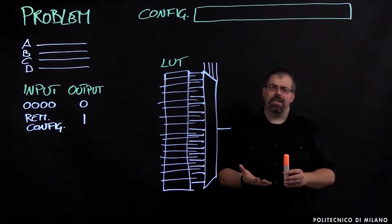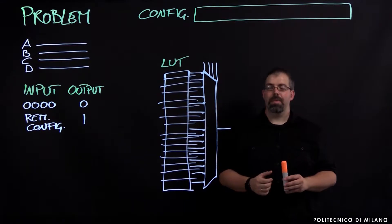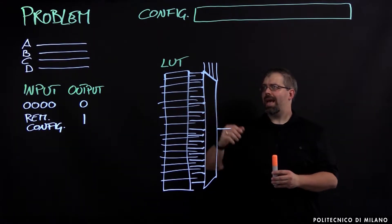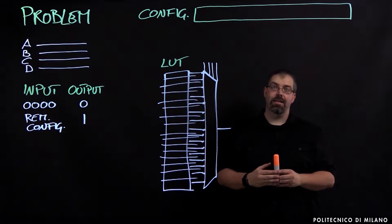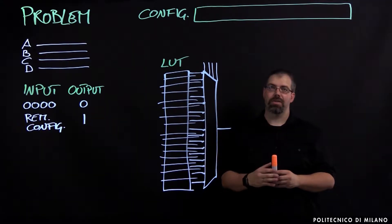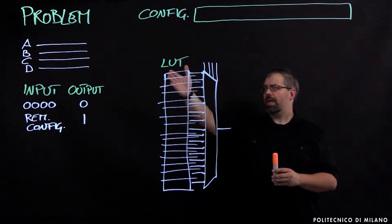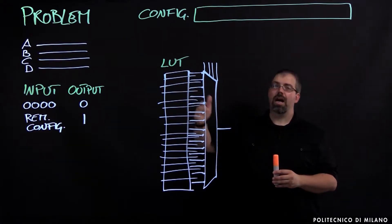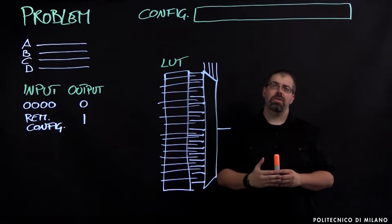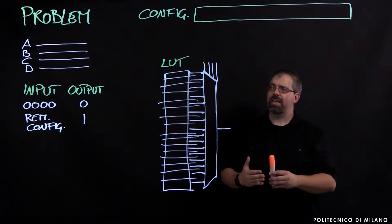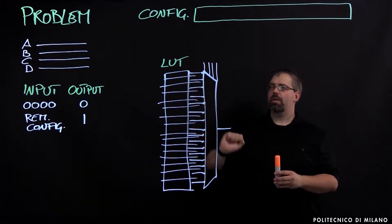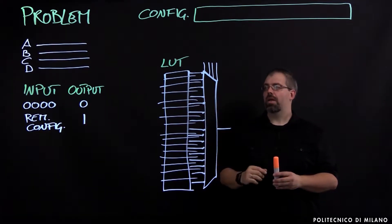In order to do this we need to start from a problem, and we already have one. We had the four-line channel and we were designing the monitoring infrastructure. We have A, B, C, D — our four lines — and our monitoring infrastructure is in charge of saying that the channel is going to be used if at least one of those lines is going to be used.